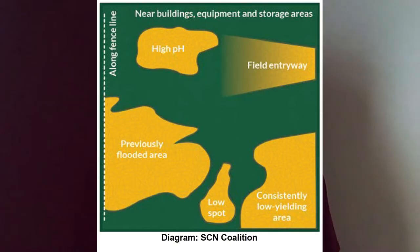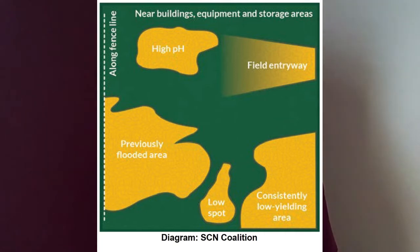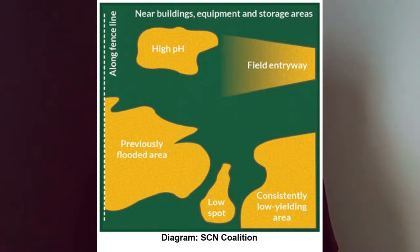To find SCN in a field for the first time, focus on collecting soil cores from areas of the field where infested soil is likely to be introduced or settle out, like field entrances, lower areas where water pools or floods, and along shelter belts and fence lines.